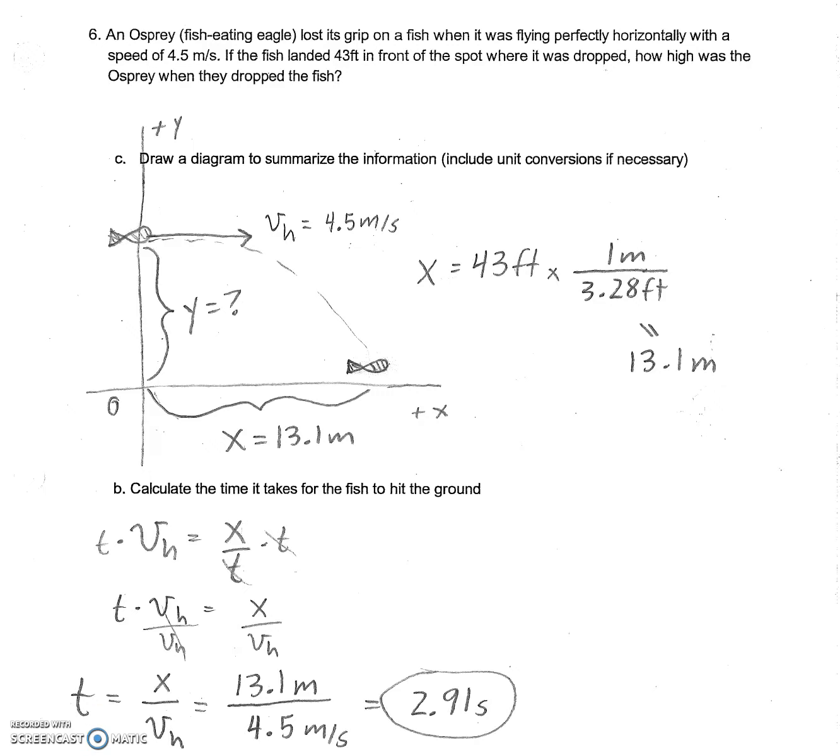Okay, now we've got our next question. It tells us that our horizontal velocity is 4.5 meters per second. It tells us that our horizontal distance is 43 feet, so we can convert that to meters, and we get 13.1 meters. We can plug that into our diagram. We don't know the vertical distance or our y value.